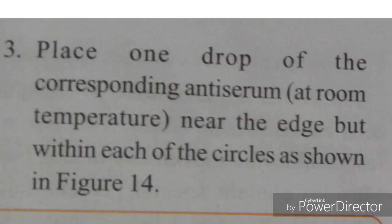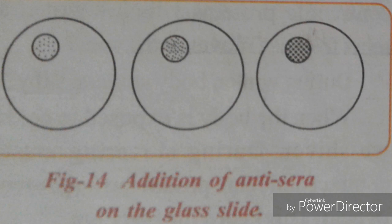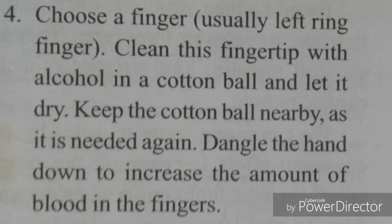Step 3: Place one drop of the corresponding anti-serum near the edge, packed within each of the circles, as shown in figure 14. Step 4: Choose a finger — usually the left ring finger. Clean the fingertip with alcohol on a cotton ball and let it dry. Keep the cotton ball nearby as it is needed again. Dangle the hand down to increase the amount of blood flow into the fingers.